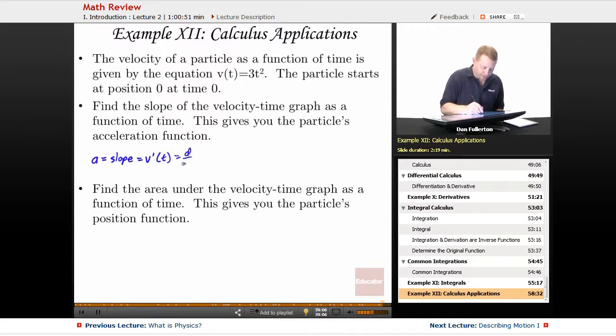Which is going to be the derivative with respect to t, the derivative with respect to time of whatever that function is, 3t², which happens to be 6t. So the acceleration of the particle is equal to 6 times whatever the time happens to be.